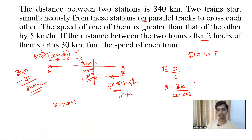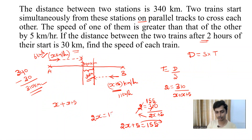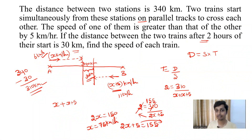Now we can find the value of x. Using time equals distance divided by speed: 2 = 310 divided by (2x plus 5). Solving: 2x plus 5 = 155, so 2x = 150, and x = 75. The speed of the train starting from A is 75 km/hr. The speed of the train starting from B is x plus 5, which is 80 km/hr. So the speed of one train is 75 km/hr and the other is 80 km/hr — and this is our answer.